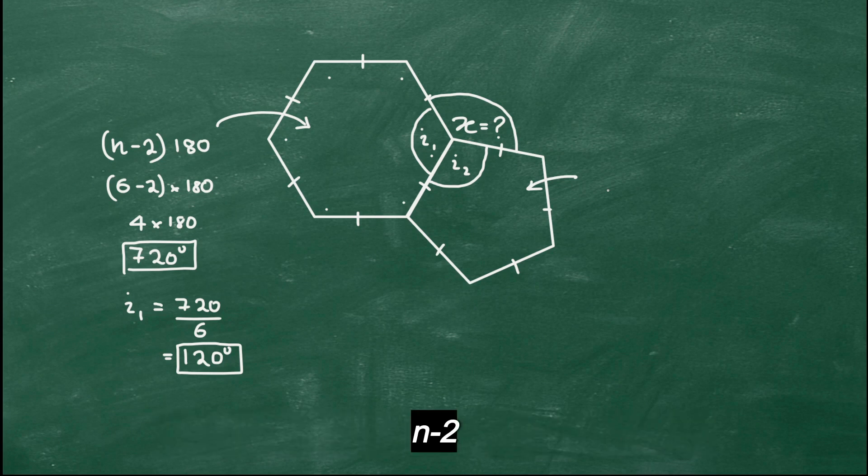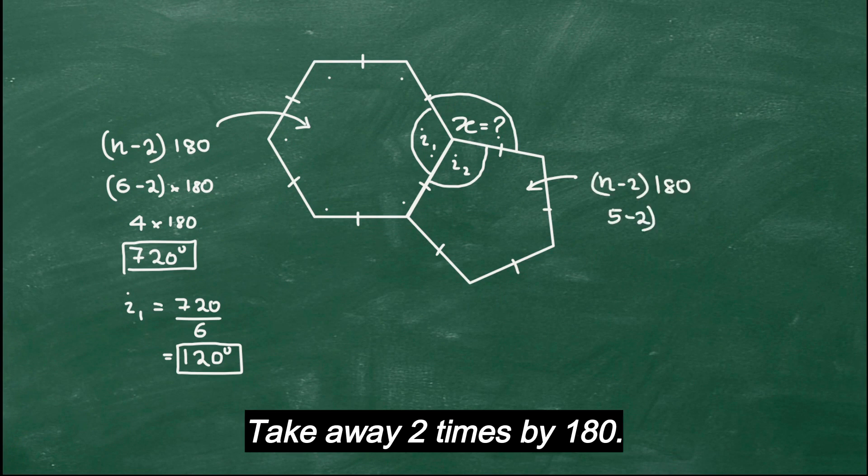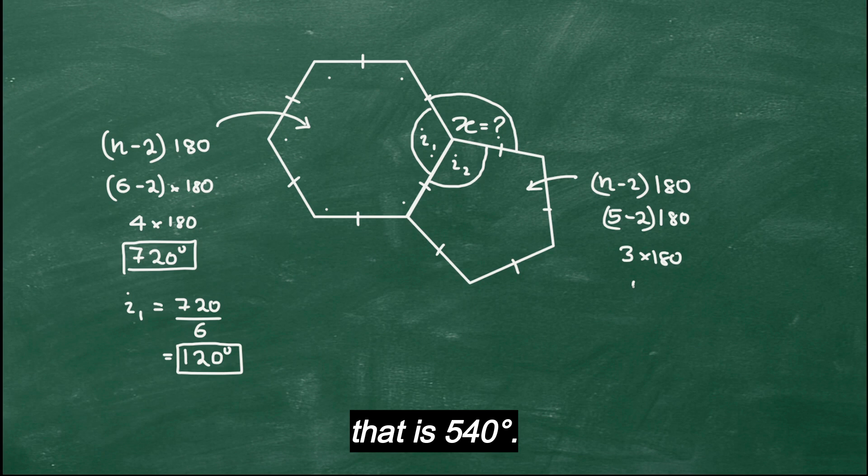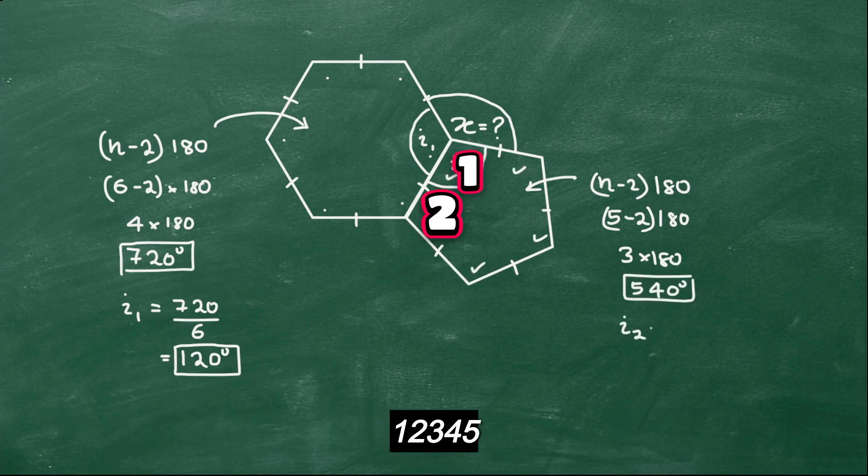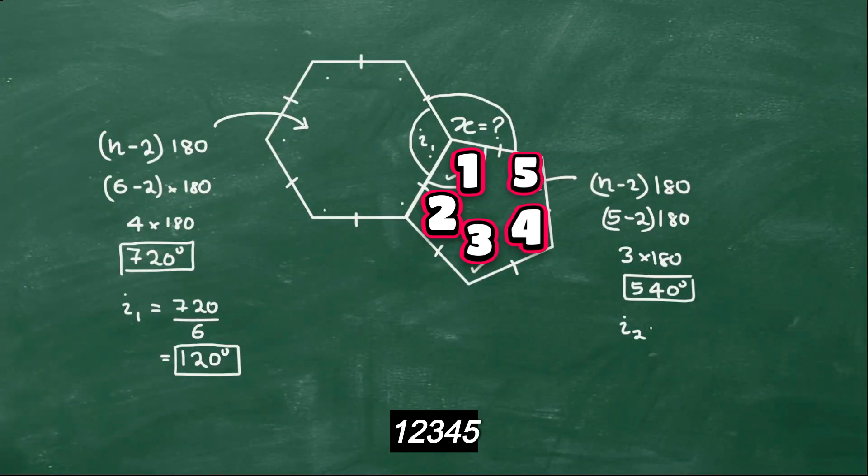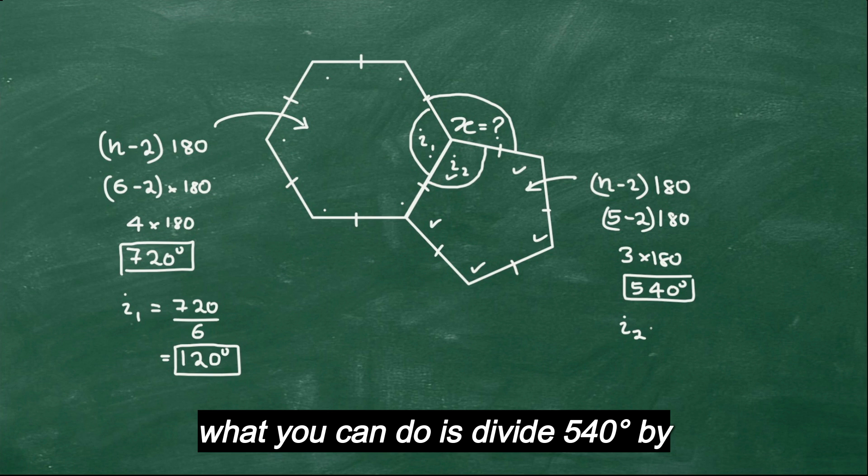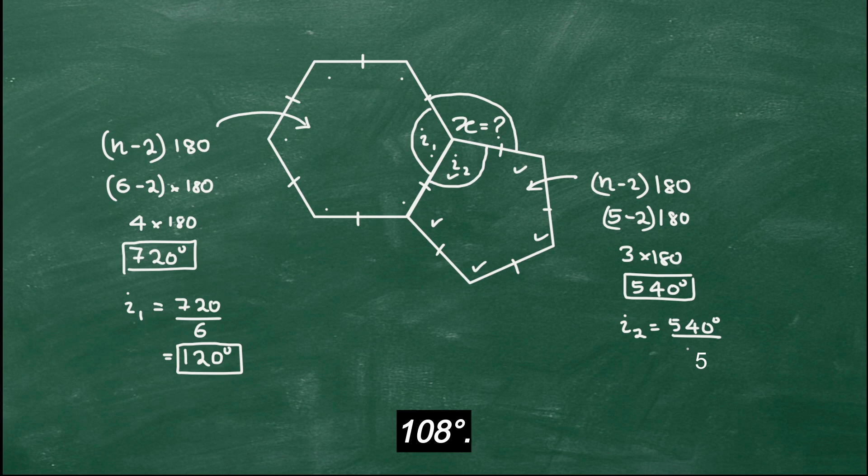Let's do the same thing: n minus 2 times by 180. In this case, 5 take away 2 times by 180, that will be 3 times 180, that is 540 degrees. Now remember, this is for all 5 of them, 1, 2, 3, 4, 5.